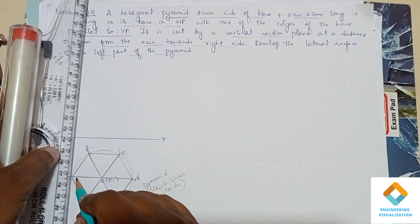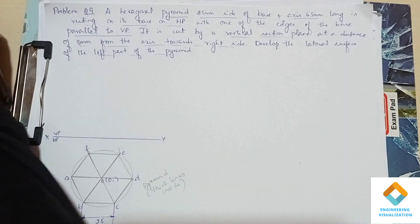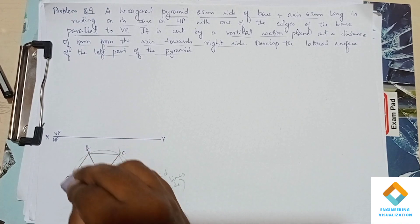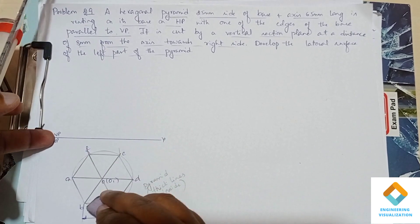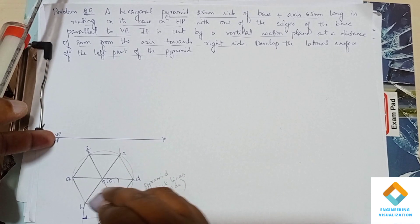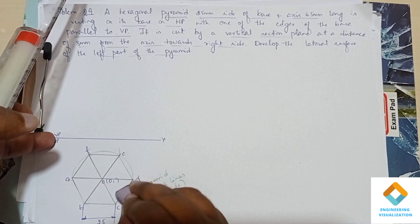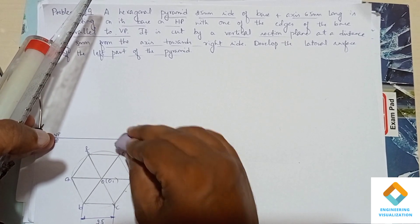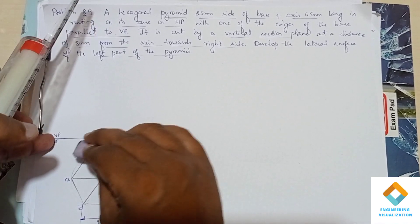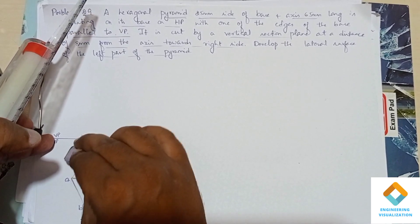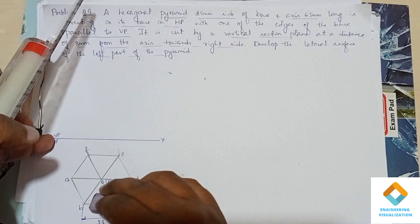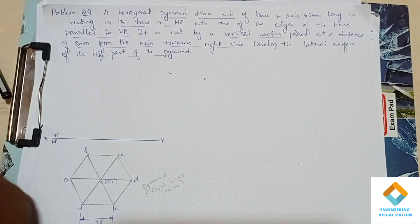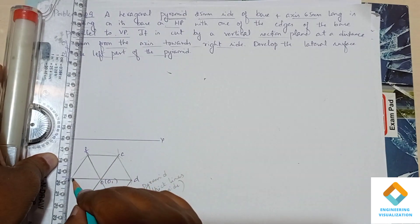Now draw the front view by projecting it. I will be erasing the circle — the circle is not required anymore since we have constructed the hexagon. Remove and erase that circle. Make sure after constructing the hexagon you erase the circle; otherwise they will be considering a different thing.